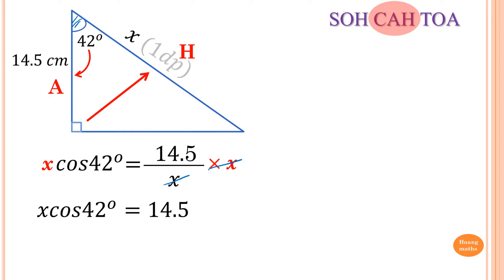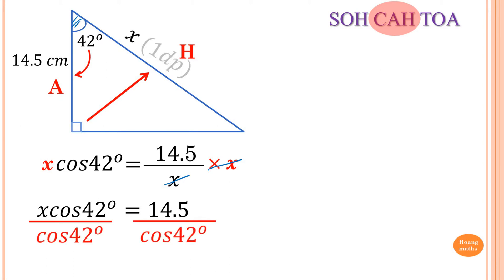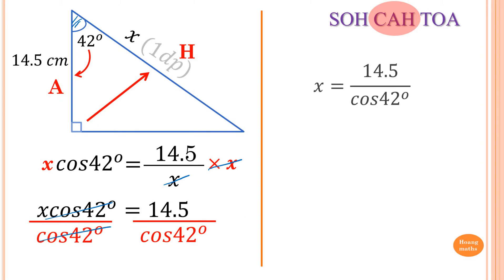Now we need to get rid of the cos of 42 by dividing both sides by cos of 42. So this is gone, leaving X is equal to 14.5 over cos of 42.